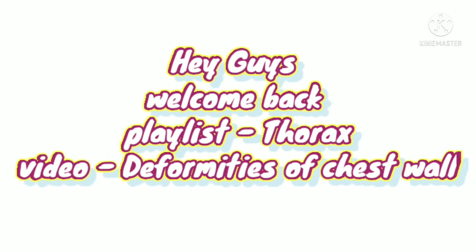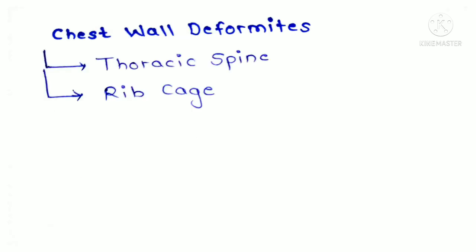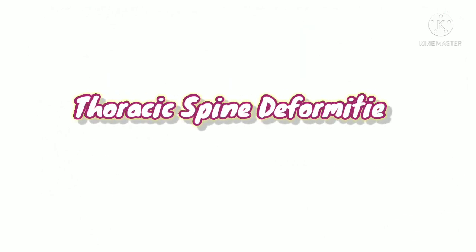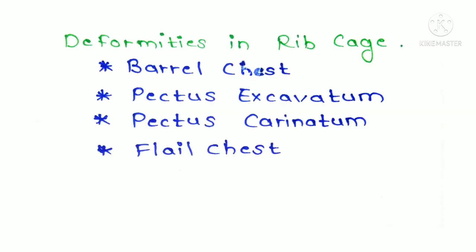Welcome back. In this video we are going to discuss chest wall deformities, particularly deformities caused in the thoracic spine and the ribcage. From thoracic spine deformities we will focus on scoliosis and kyphosis, and from ribcage deformities we will focus on barrel chest, pectus excavatum, pectus carinatum, and flail chest. Let's start with the ribcage deformities.